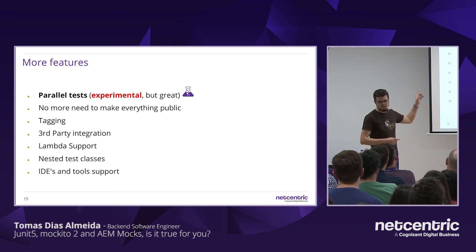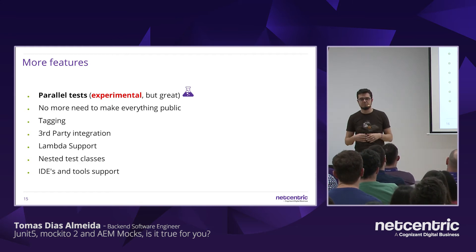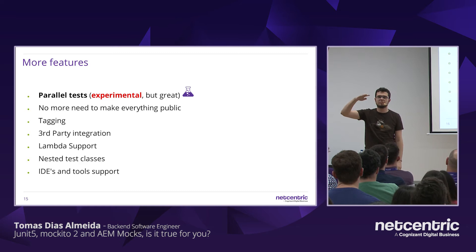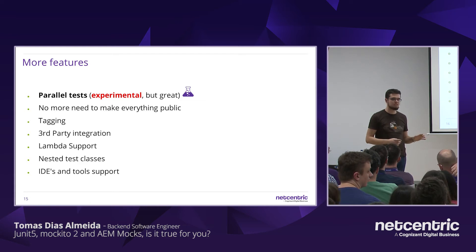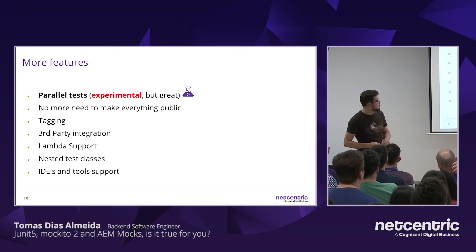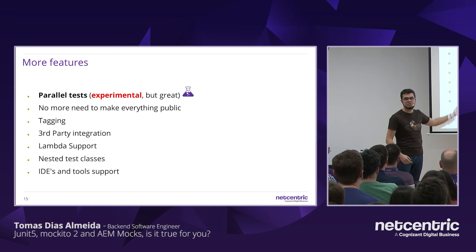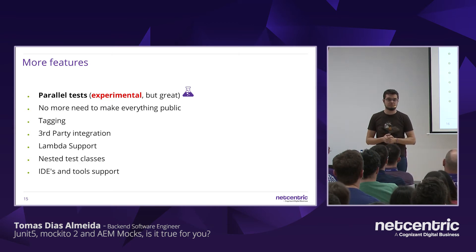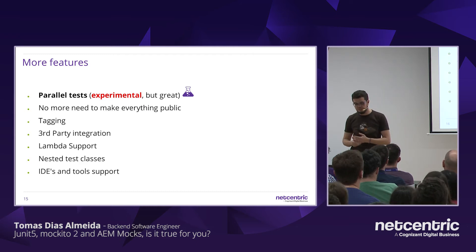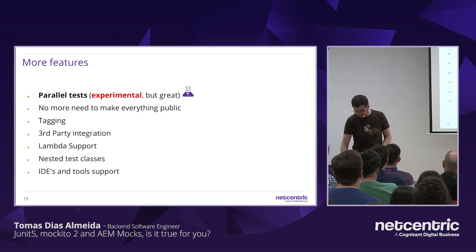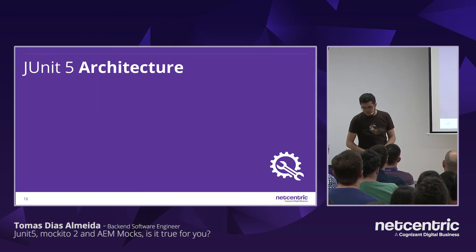Another improvement: no more need to make everything public. You don't need to say public class, public test, public setup, etc. Default visibility is fine, so there's less boilerplate code to read. Also, as you can see, Lambda support — you can use lambdas in your tests, making the code shorter and more readable, especially for those working with Java 8. And there's also full IDE and tooling support.